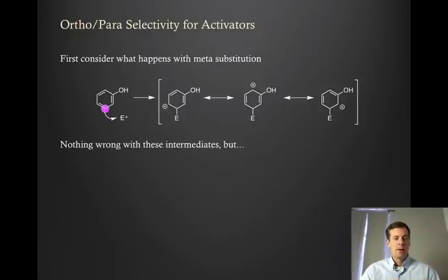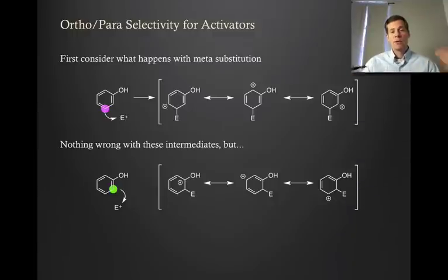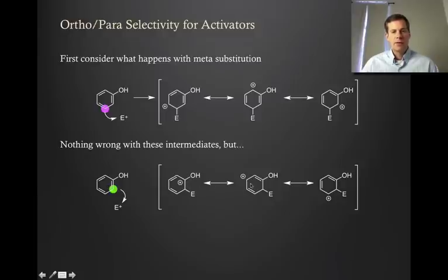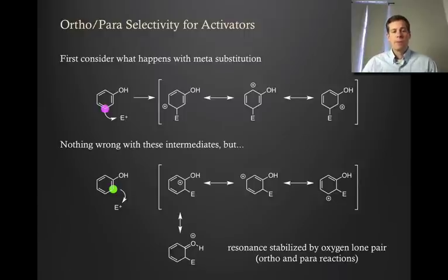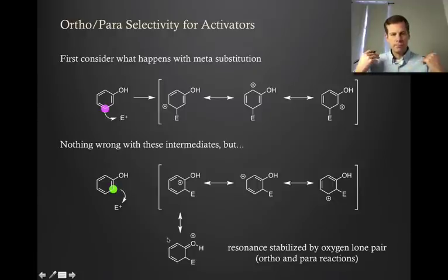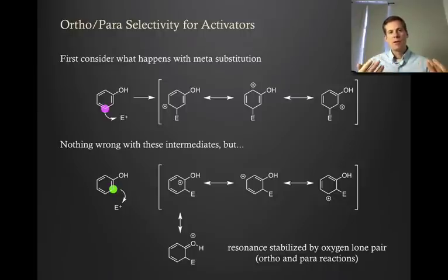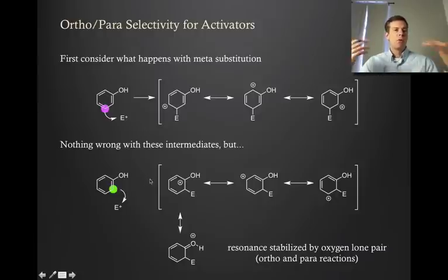But if we compare this to the intermediates we get when reacting either ortho or para — I'll pick ortho, though the para would look very close — we get to this intermediate. We can draw the other two resonance forms, but now there's a fourth resonance form that's very special. What we've been able to do in this resonance form is to engage the lone pair on that hydroxyl group, donate in, and give a resonance form where now everything has a satisfied octet. Whenever you can stabilize a carbocation with lone pairs from an adjacent group, that is a massive stabilizer. We only get this resonance form if we react ortho or para — we don't get it for meta. So meta isn't bad, but ortho and para is way, way better.